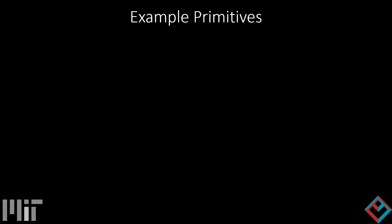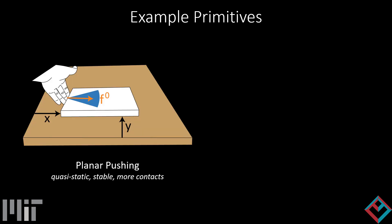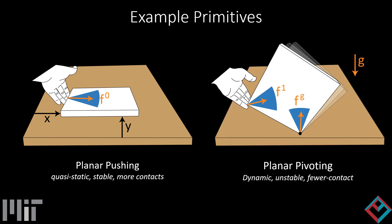We apply our algorithm to two hybrid manipulation primitives. The first is pushing in the horizontal plane, which is quasi-static and stable. The second is pivoting in the gravity plane about a fixed pivot, which is dynamic and unstable. In both cases, the algorithm chooses from the predetermined contacts shown with purple dots.